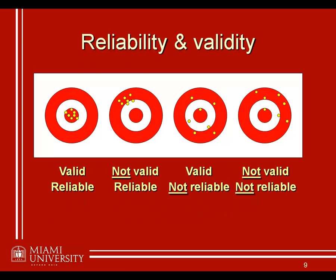Think about the last slide: if we don't have reliability, look at those last two targets — the points are all over the place, so we can't really know where the person is aiming. Compare that to the first two targets. In that situation, we know where the person's aiming. With reliability, we can see they're aiming in the right place in the first panel, and aiming in the wrong place in the second panel — but at least we know where they're aiming.